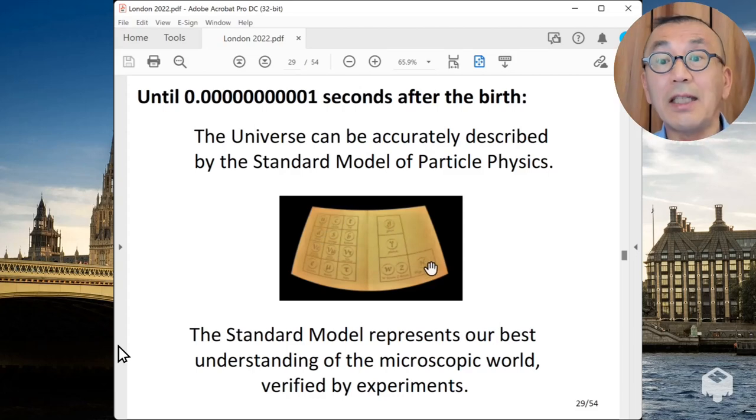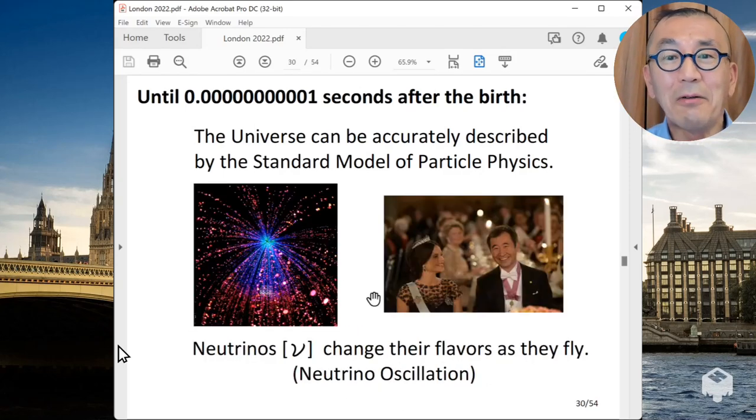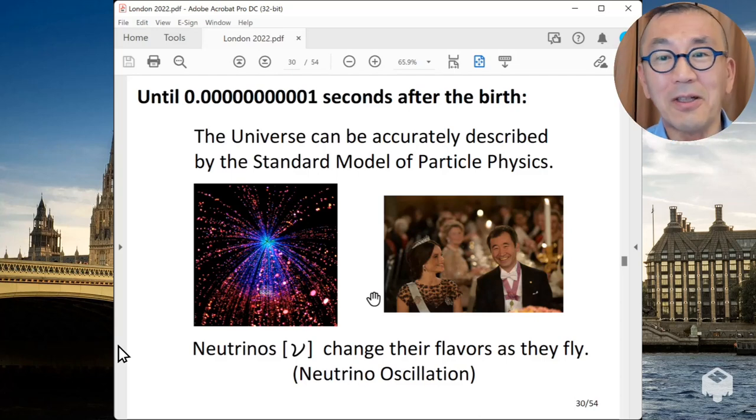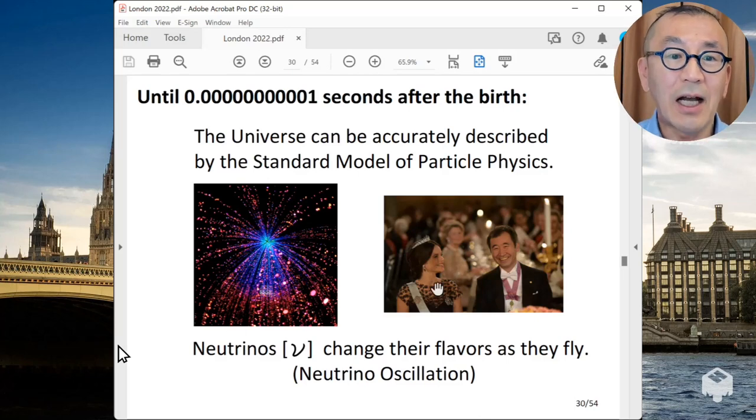There are 17 different elementary particles in this theory. And in the movie, we introduce you some of these elementary particles on this table. One of our favorite particles is neutrino, because Japanese scientists have made lots of contributions in understanding this elementary particle. In fact, two Nobel Prize have been awarded for Japanese scientists, Koshiba and Kajita, which is shown here, for their study of neutrinos.